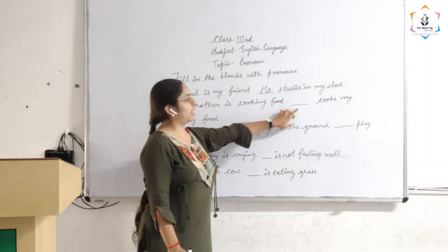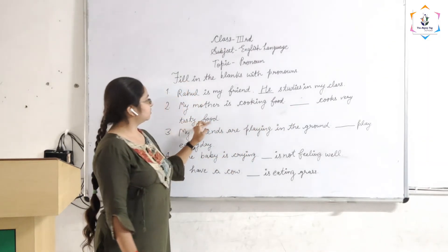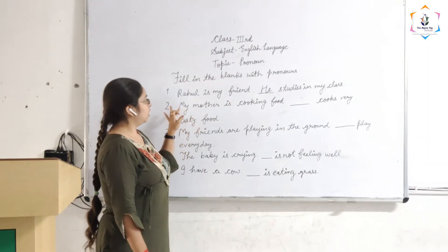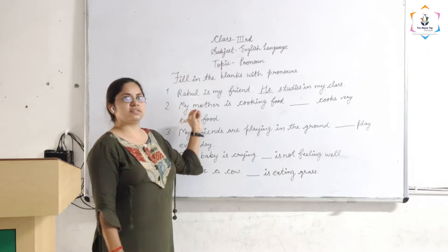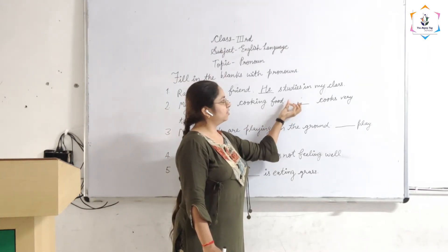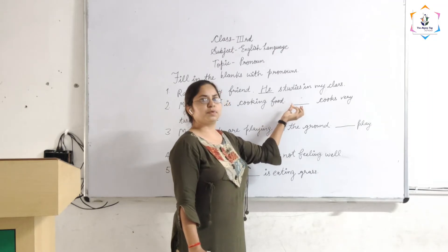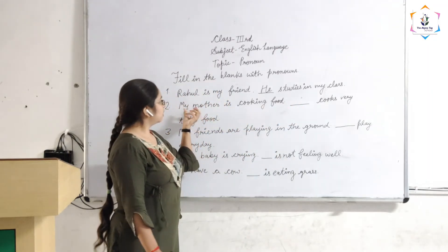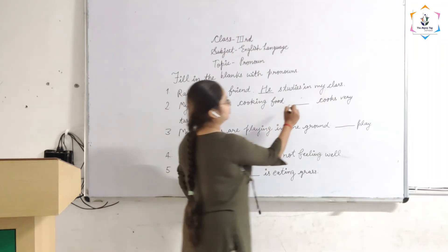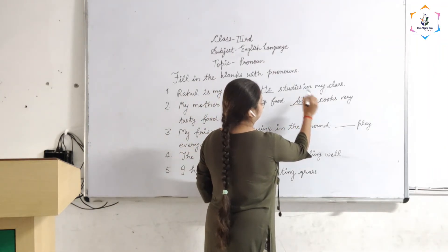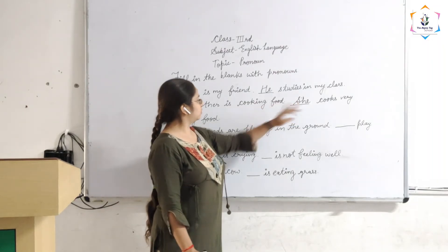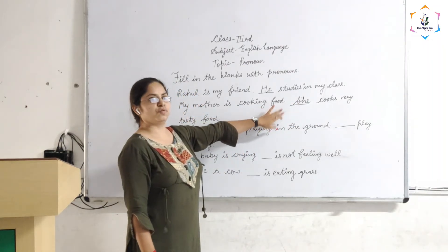Next: 'My mother is cooking food. ___ cooks very tasty food.' In the first sentence, 'my mother' is the noun. In the second sentence we will use a pronoun. My mother is female, and for females we use the pronoun 'she'. So: 'My mother is cooking food. She cooks very tasty food.'